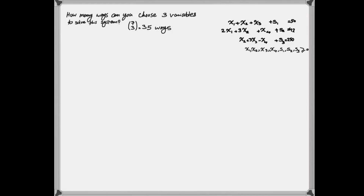Let's pick three decision variables and solve the system. In example one, I assume the four decision variables equal to zero are x1 through x4. Therefore, the solution is simply: the slack variable of the first constraint equals 50, the second slack equals 42, and the third equals 250. This is basically the initial simplex table, where all main variables are zero and the slack variables are positive.